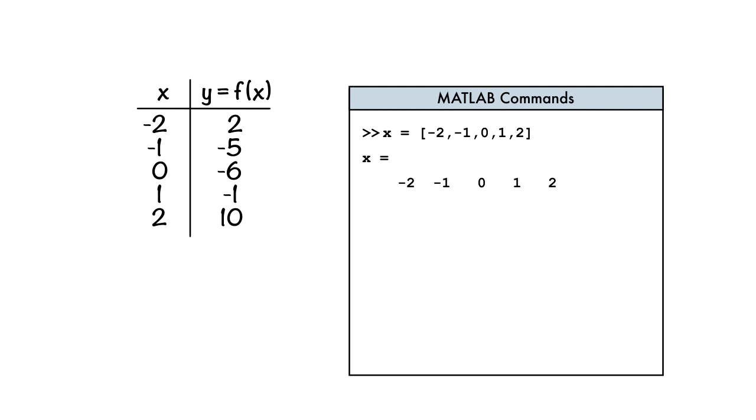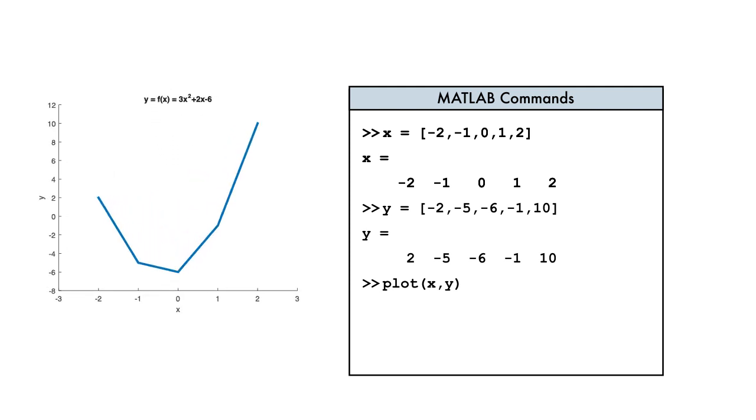Now back to that plot. Let's go ahead and create y as a row vector too. Then we call the plot function, using our x and y vectors as inputs, and there you go. Now, we have a plot of our points.